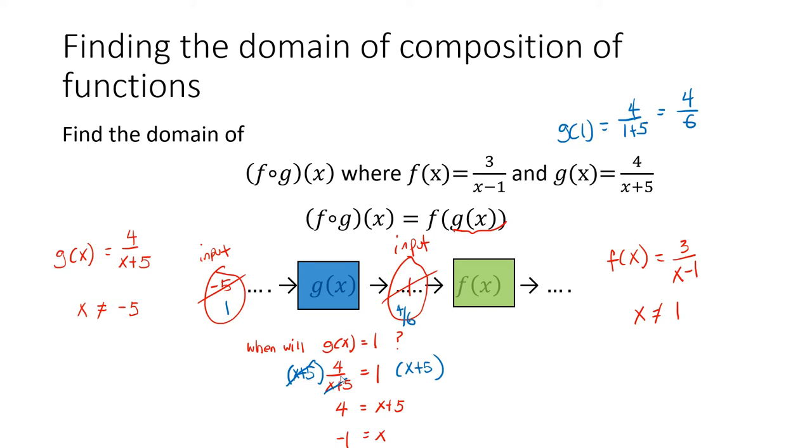So this means we need to get rid of -1 as our original input, because that -1 will turn into 1 after going through g(x). So our domain is all real numbers except -5, which gave us problem for g(x), and -1, which turns into 1 that causes problem for f(x).